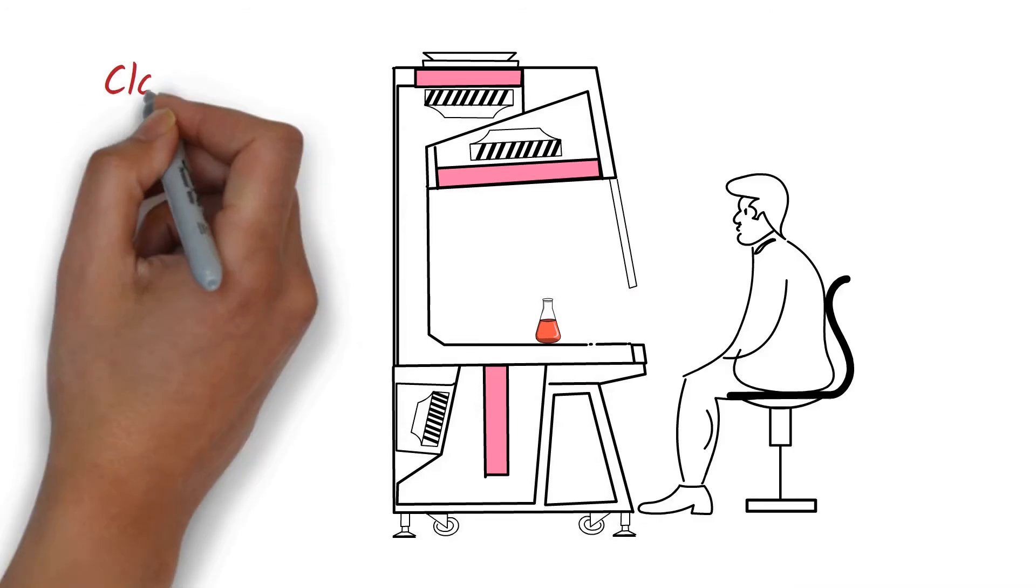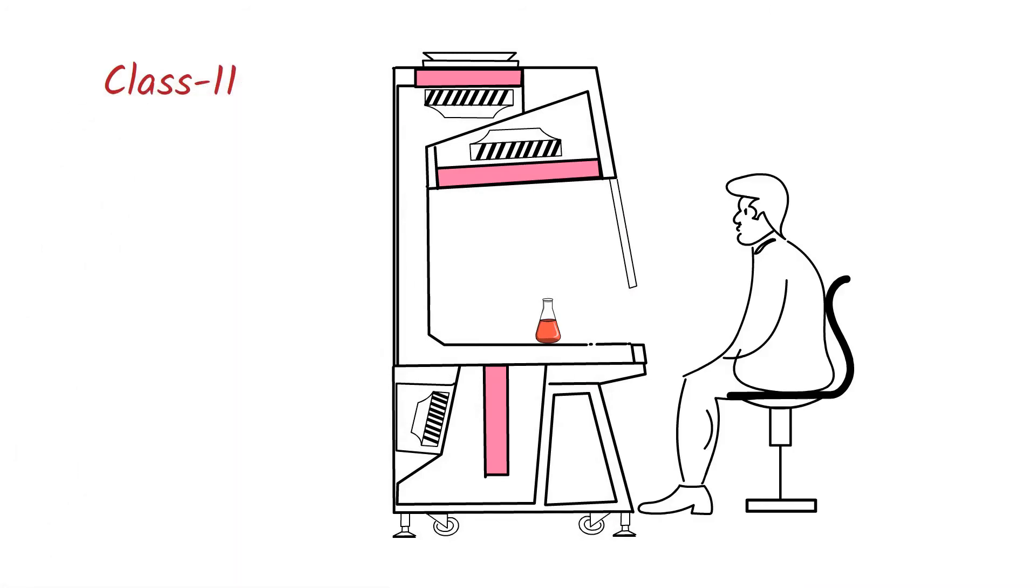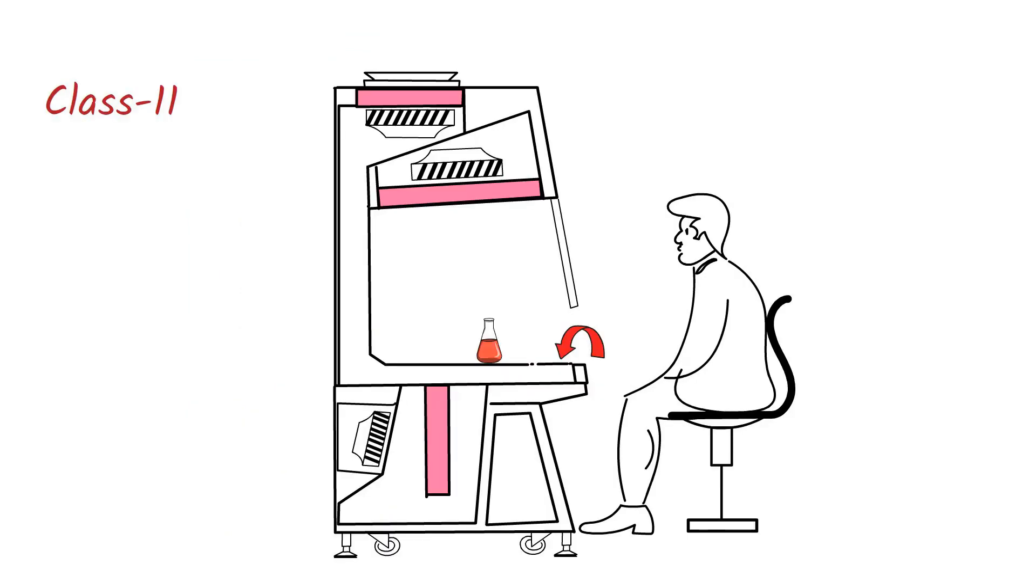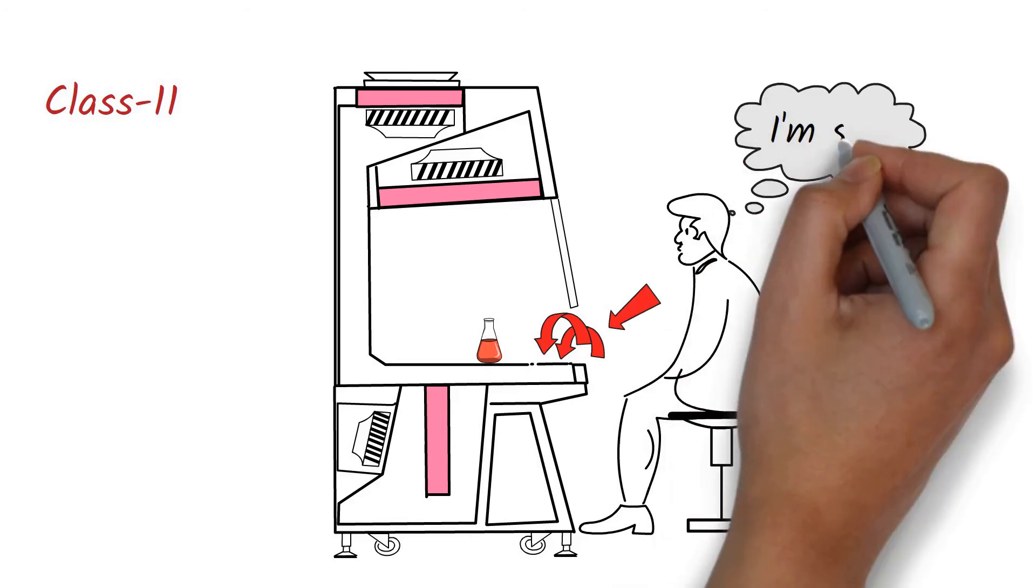On the other hand, in the Class 2 biosafety cabinets, the air enters into the cabinet through the front grill. If you remember, in the laminar airflow, the airflow is towards the operator. Whereas in this case, the air is pulled from the front grill, which means the dirty air is pulled from the operator side and thus providing safety to the operator.